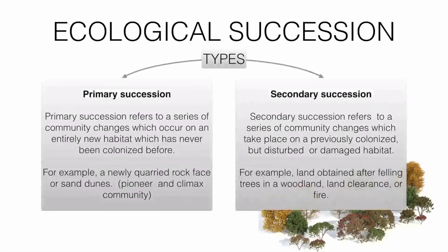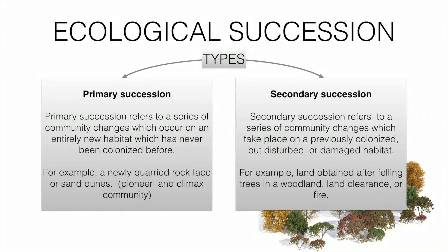Ecological succession is divided into two parts: primary succession and secondary succession. Primary succession refers to the series of community changes which occur on an entirely new habitat which has never been colonized before. Secondary succession refers to a series of community changes which take place on a previously colonized but disturbed or damaged habitat. Primary succession takes place on bare or clean land.